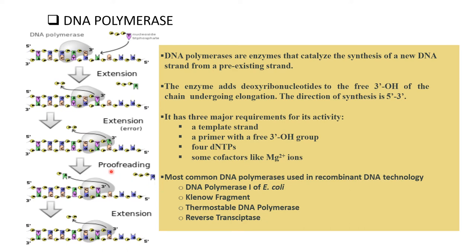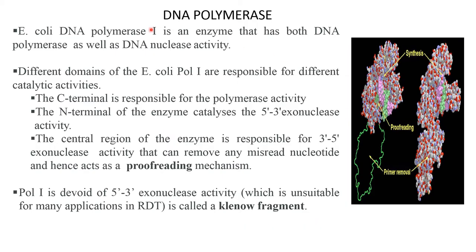The most common DNA polymerases used in recombinant DNA technology are DNA polymerase I of E. coli, the Klenow fragment, thermostable DNA polymerase, and reverse transcriptase. E. coli DNA polymerase I is an enzyme that has both DNA polymerase as well as DNA nuclease activity. Different domains of E. coli Pol I are responsible for different catalytic activities. The C-terminal is responsible for the polymerase activity, and the N-terminal catalyzes 5' to 3' exonuclease activity.